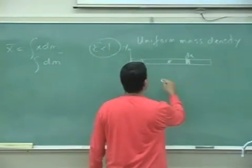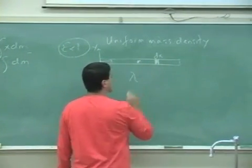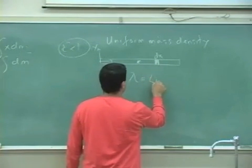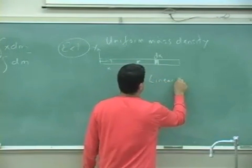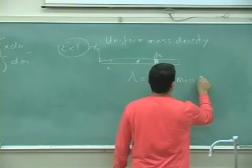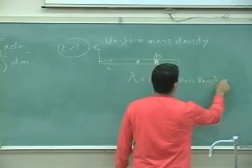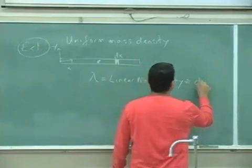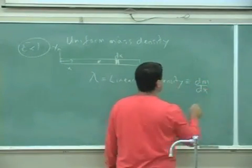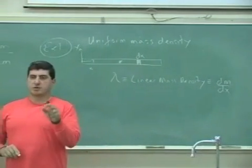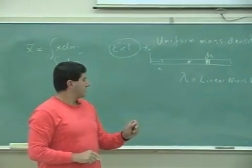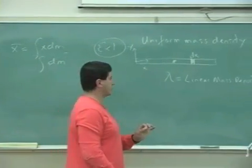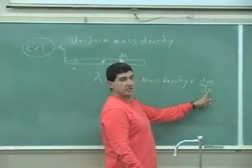So then we're going to define something known as the linear mass density, and we're defining this as dm over dx. So the linear mass density is something that tells you how much mass is concentrated in a certain unit length of the rod.